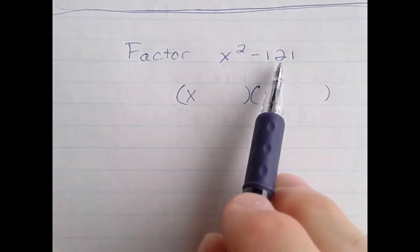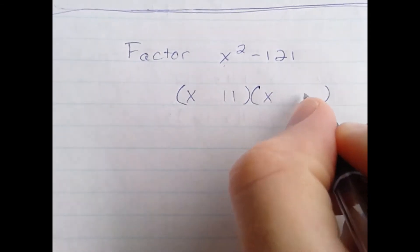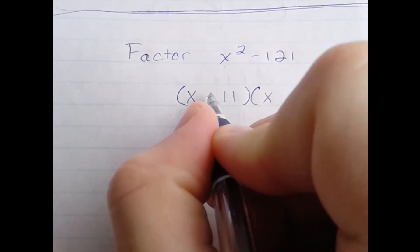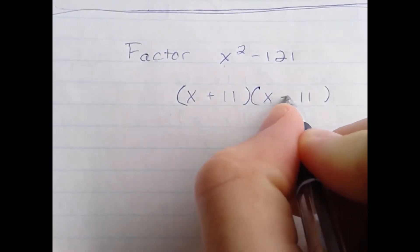Then I take the square root of 121, which is 11. And according to the formula for difference of squares, one term must be positive, one must be negative.